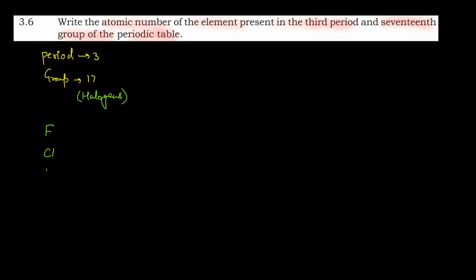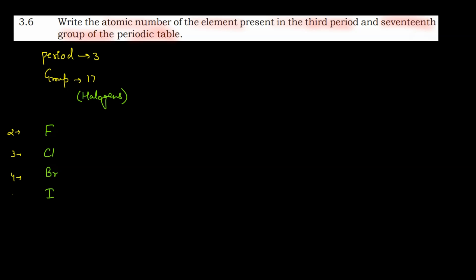The halogens include chlorine, bromine, and iodine. Now, we need to remember the element in the third period. You might think the answer is bromine — but that would be wrong. Chlorine is present in the third period, not the second. This is the second period, this is the third period, this is the fourth period, and this is the fifth period.